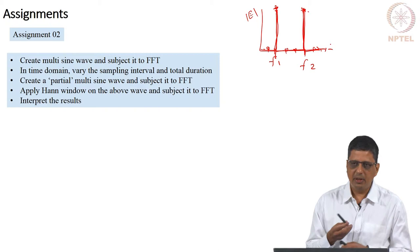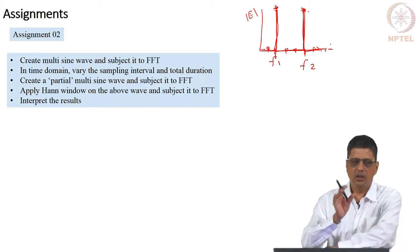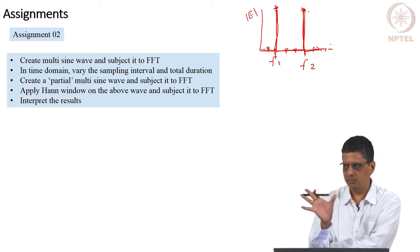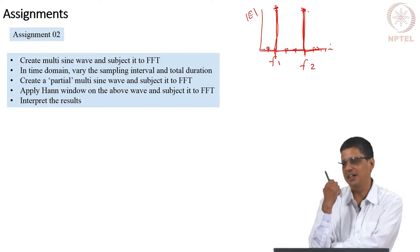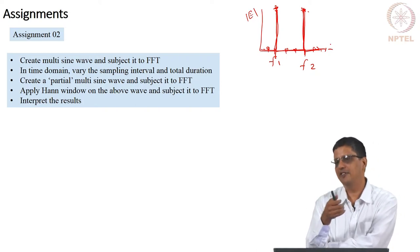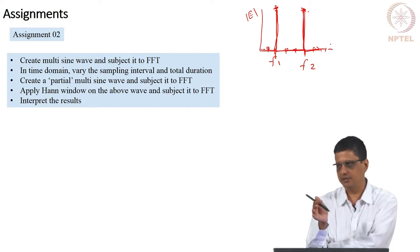So in time domain, I asked you to vary the sampling frequency and the total duration. So I have given you specifically, do it for 10 millisecond, 5 millisecond, 100 seconds, whatever number. Do the FFT, then I would like you to interpret the data and tell what is the difference if you change the number of samples, if you change the total duration of the data acquisition.